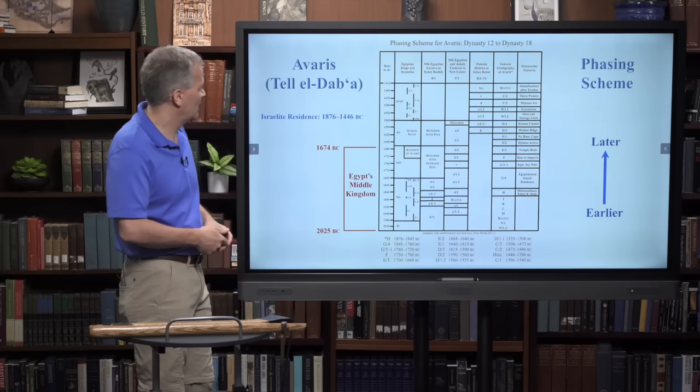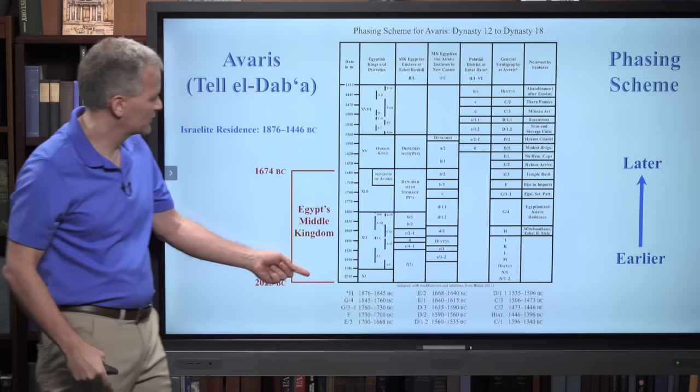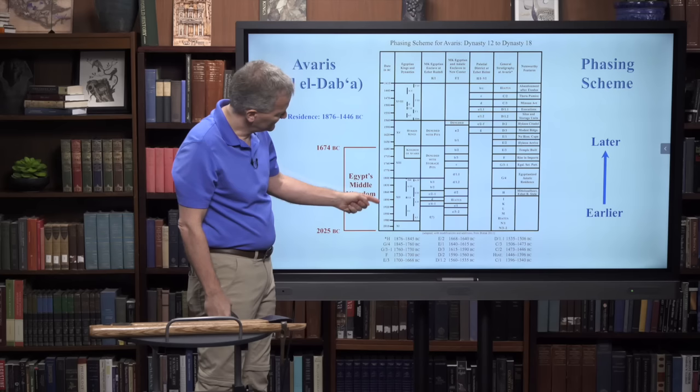Let's look at a phasing scheme for the site of Avaris. It can be broken down into different time periods. Each stratum represents an occupational phase when a certain group of people lived at a site for a certain period of time. Our focus is going to be on this area in red - Egypt's Middle Kingdom. As you look at this chart, down at the bottom is earlier, and as you go upward you're talking about later in time, closer to our time period. Especially in the 1800s BC, the 19th century BC, we have important occupation by the Israelites.